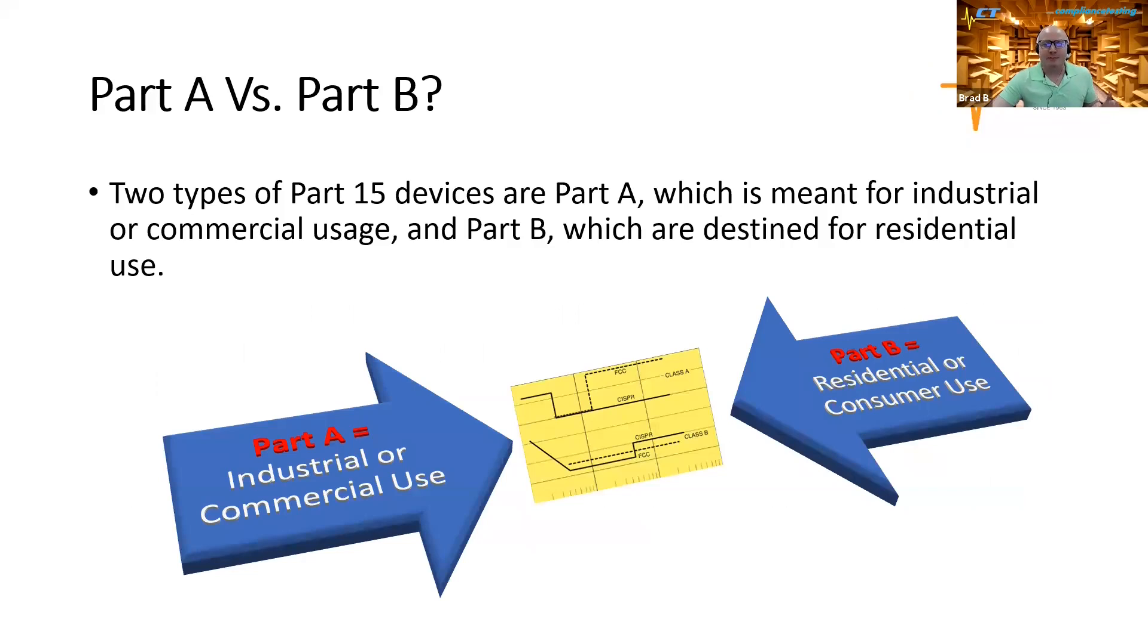What's the difference between Part A and Part B under Part 15 devices?